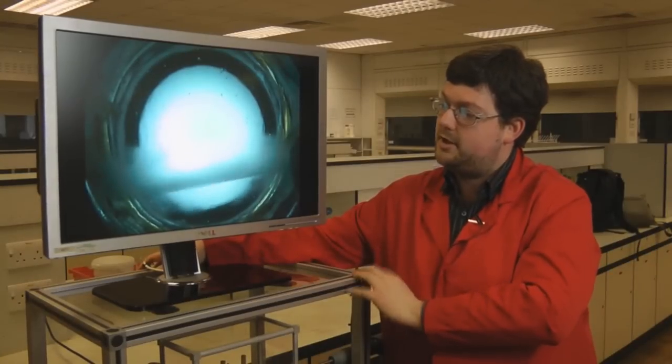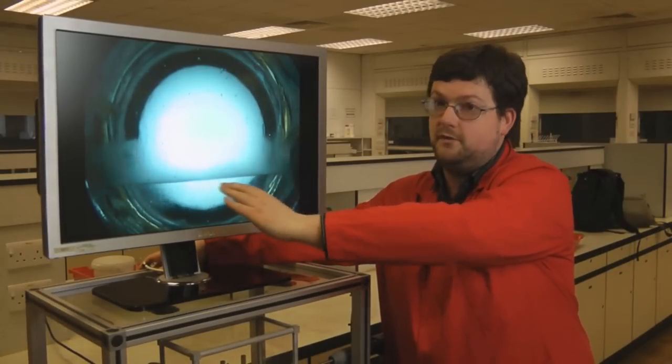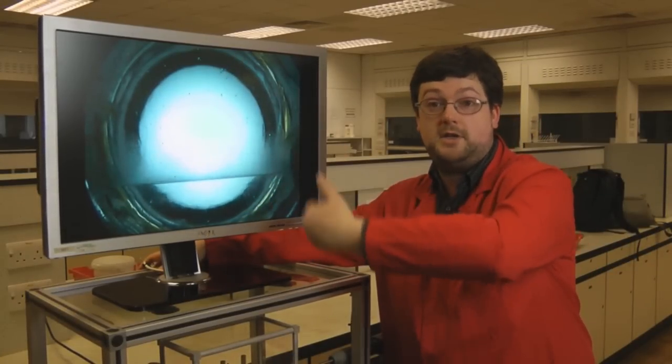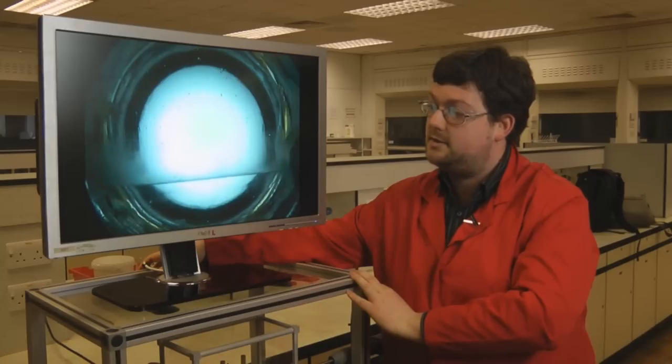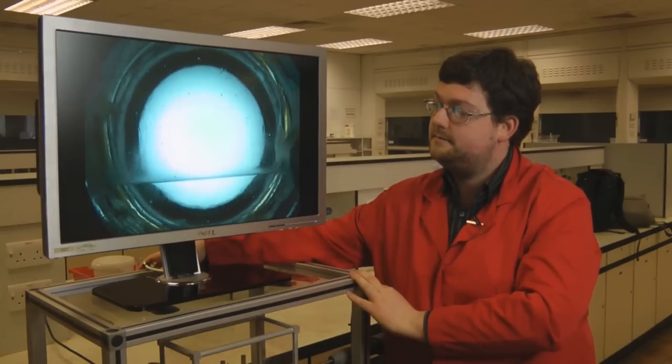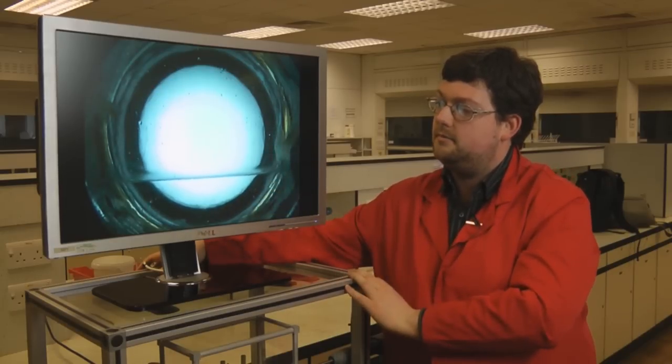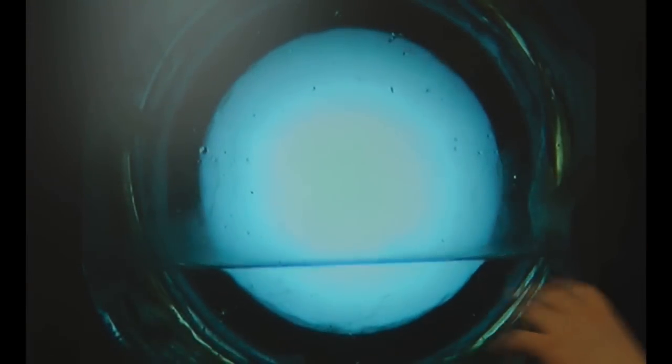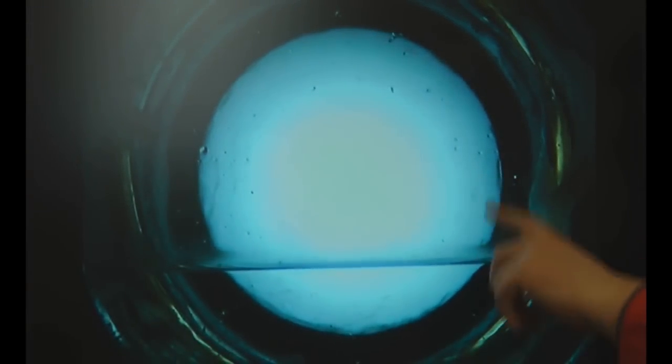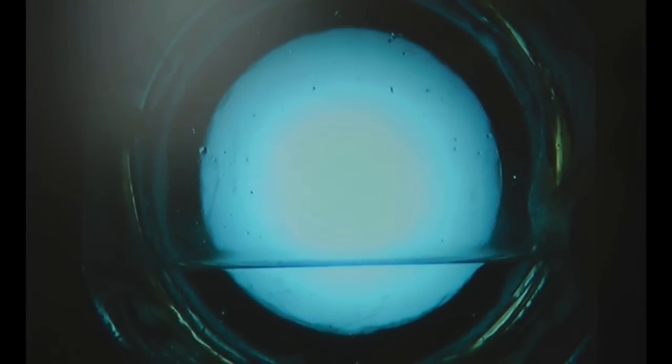If we shake the demonstration, you can see we've re-formed the meniscus—the separation between the liquid and gas phases. It takes a little bit of time for the liquid to completely get back to where it was at the beginning, so we can still see some liquid droplets forming at the side of the demonstration.